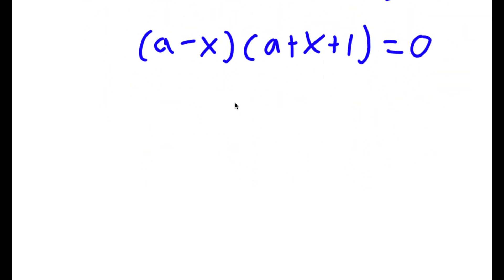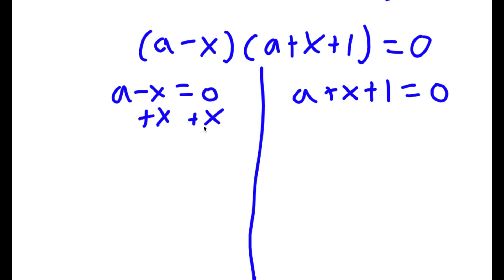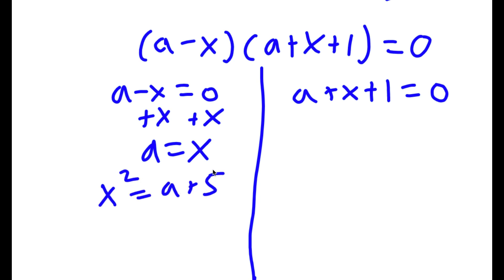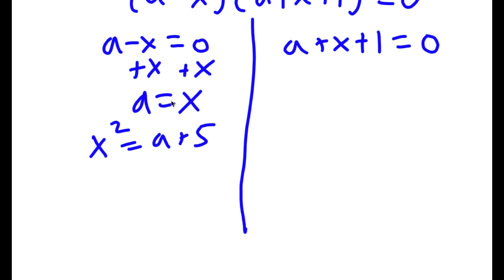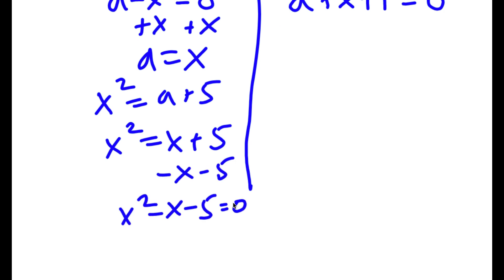This gives me two equations: a minus x equals 0, and a plus x plus 1 equals 0. For a minus x equals 0, adding x on both sides gives a equals x. Since x squared is equal to a plus 5, and a equals x, this means x squared equals x plus 5. Subtracting x and 5 on both sides gives x squared minus x minus 5 equals 0.